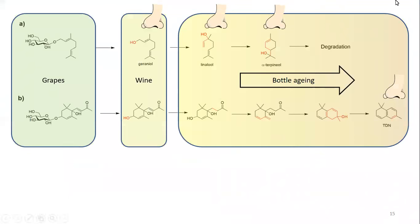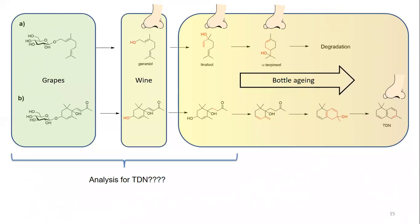This slide shows two pathways: the monoterpene pathway (A) where in grapes we have bound forms released into wine — going through geraniol, linalool, alpha-terpineol — and these things start forming into compounds we can't detect or that have no smell. In contrast, the TDN formation pathway doesn't involve aromatic compounds, so rather than nuanced changes we slowly get a ramping up of kerosene character.